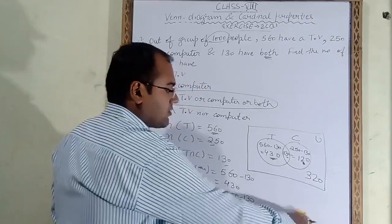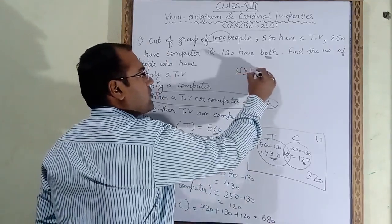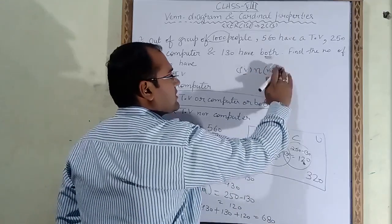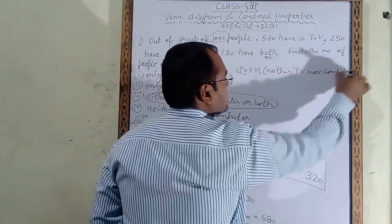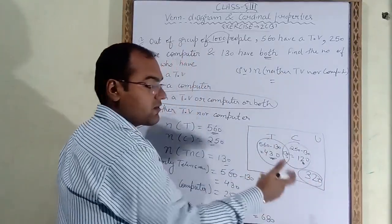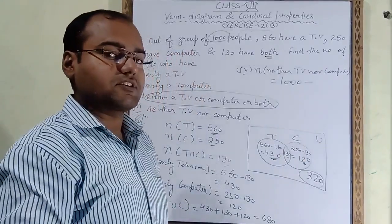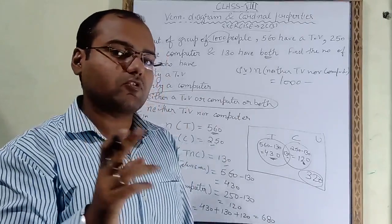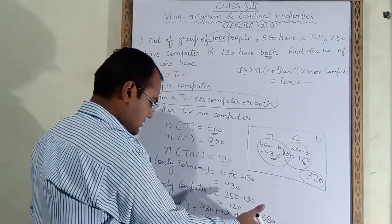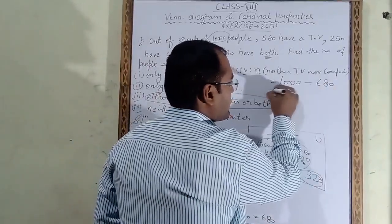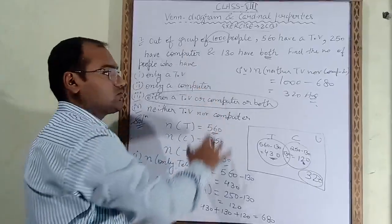People with neither television nor computer: total 1000 minus those with TV or computer or both — 1000 − 680 = 320. So 320 people have neither. Like this you have to do such questions. Thank you.